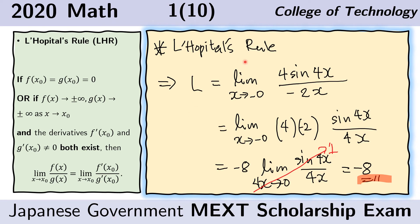We now apply L'Hôpital's rule. First, we get the derivative of the numerator. This is the derivative of the numerator, and this is the derivative of the denominator. We notice that we have a limit of sin of 4x over x. We know how to evaluate this limit if the 4x here matches the denominator. So we put that in the form sin of 4x over 4x, and the coefficient negative 2 becomes 4. To do that, we also multiply a negative 2 to cancel the effect.